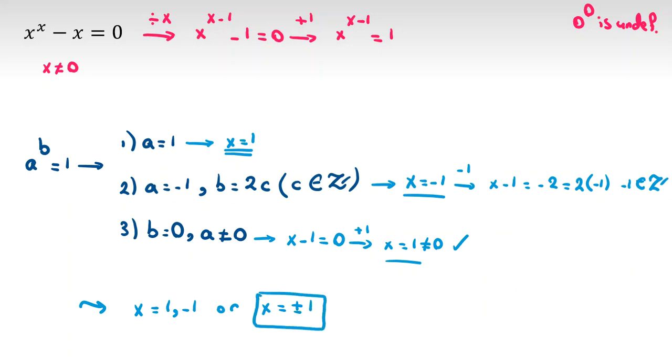You can also check in main equation x to the x minus x equal to zero. One to the one minus one obviously zero. Negative one to the power of negative one minus negative one equal to one over negative one plus one which is zero again.